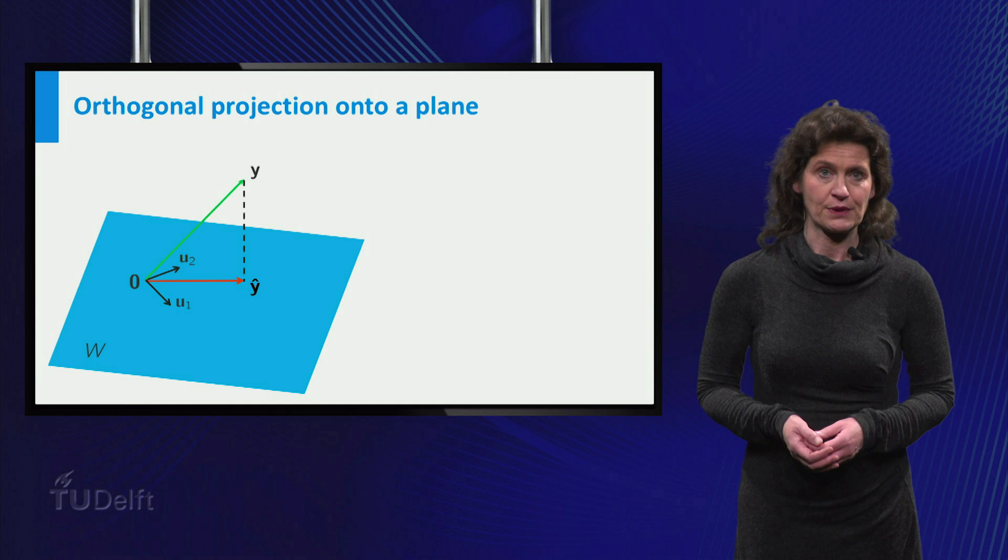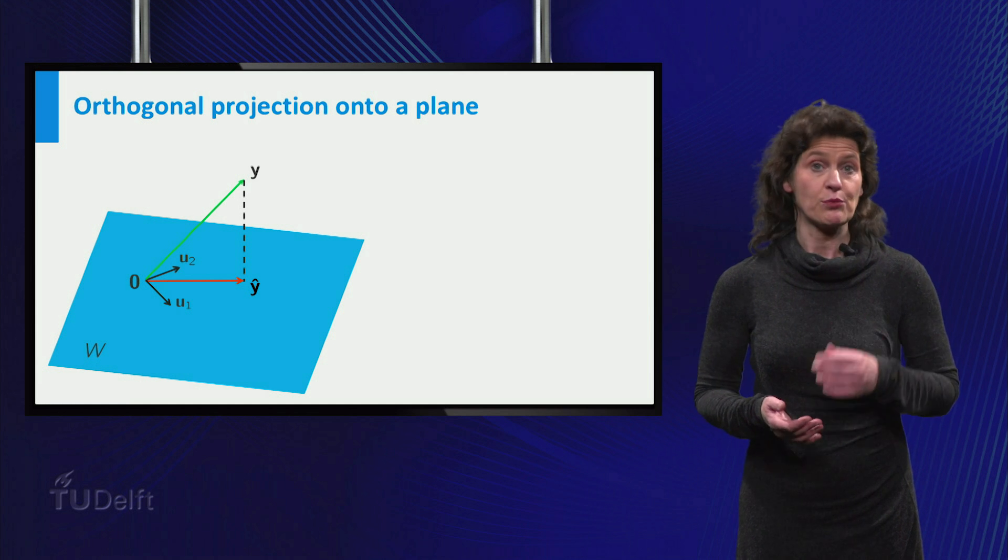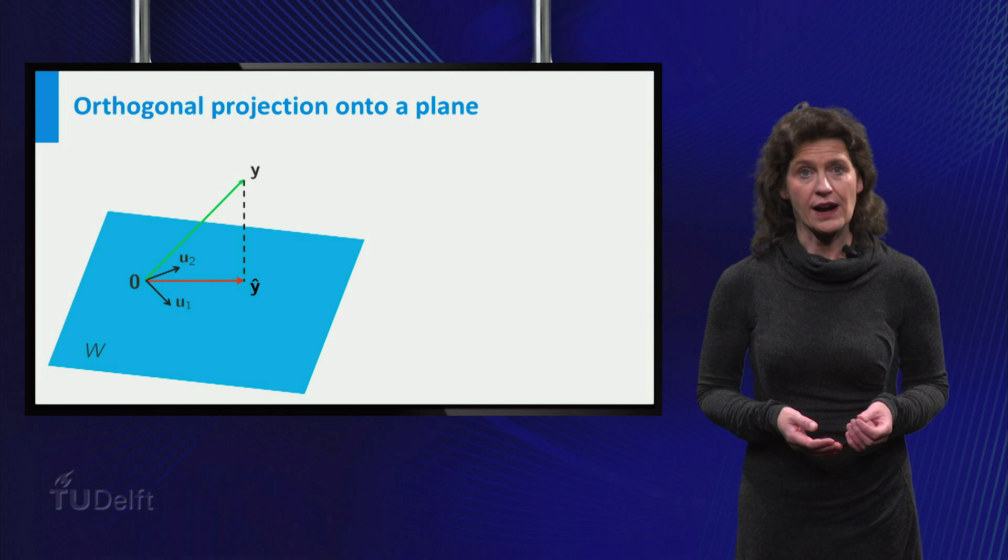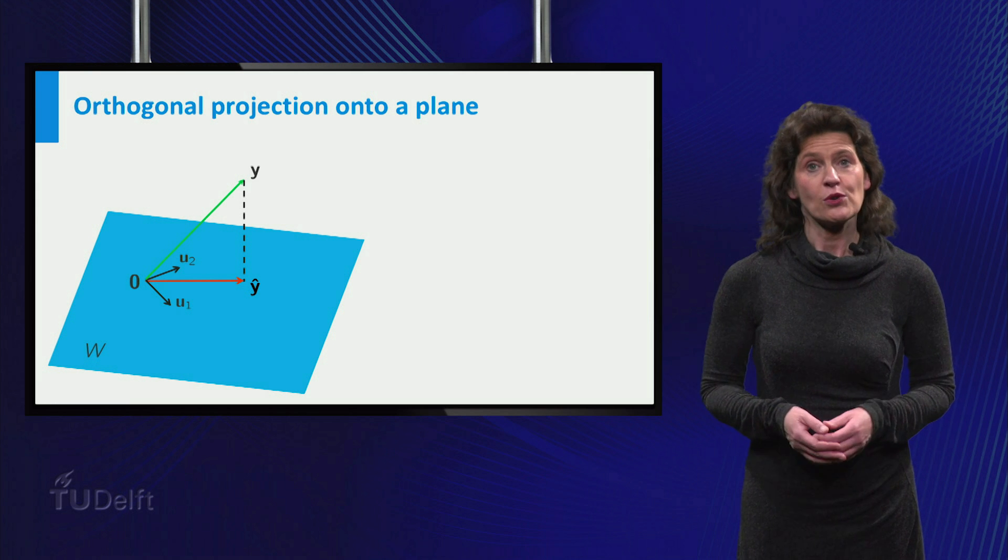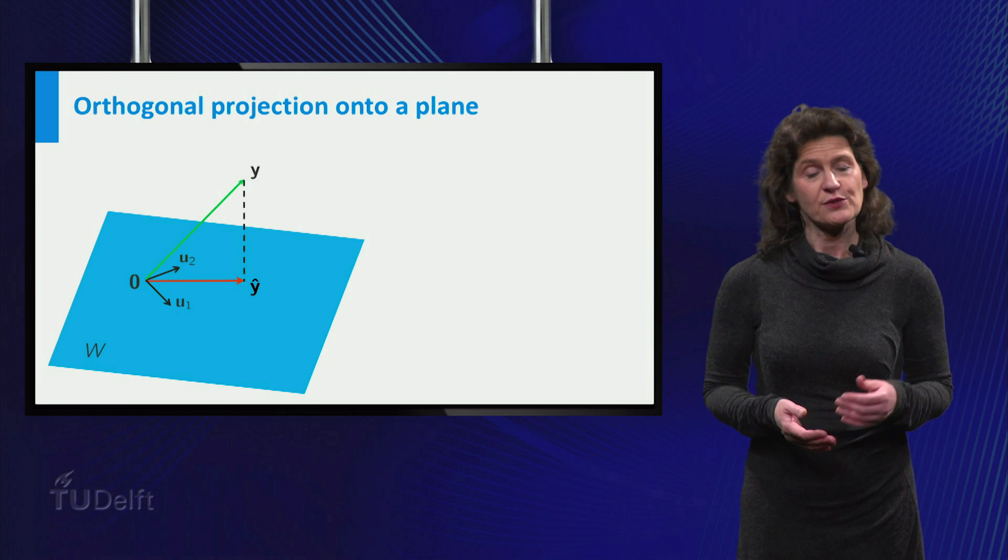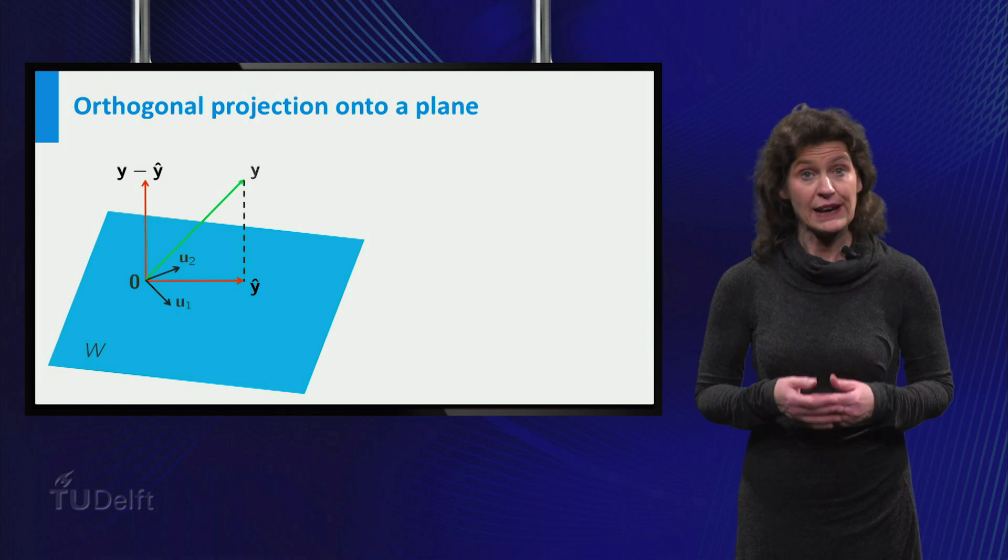Back to our original problem, let's look at it from a geometric point of view. Finding the orthogonal projection of the vector Y onto the plane W boils down to finding a vector ŷ in W such that the vector Y minus ŷ is orthogonal to the plane.